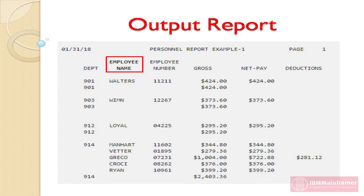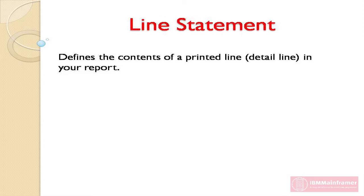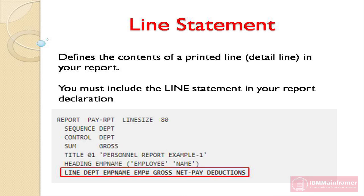This is how the output looks. The last report definition statement is the Line statement. It defines the contents of a printed line — that is, the detail line — in your report. You must include the Line statement in your report declaration. In our example program, it defines which fields we want printed on a line and the order in which we want them printed.